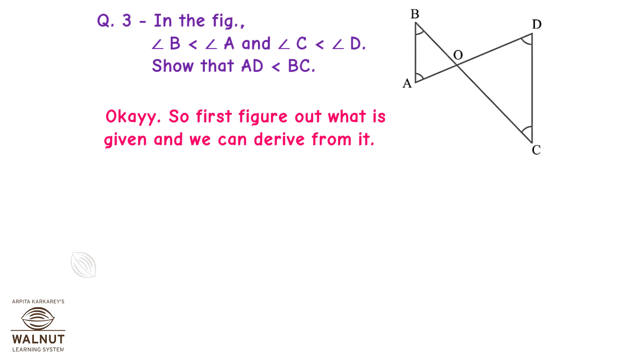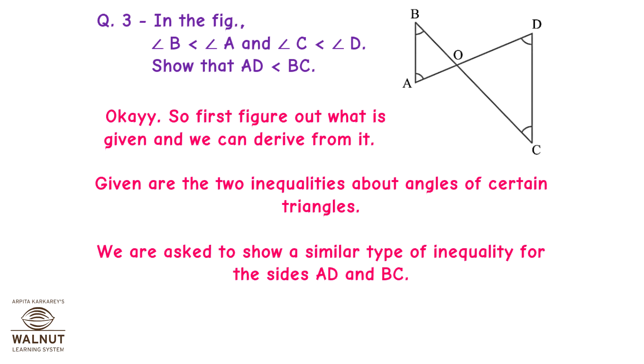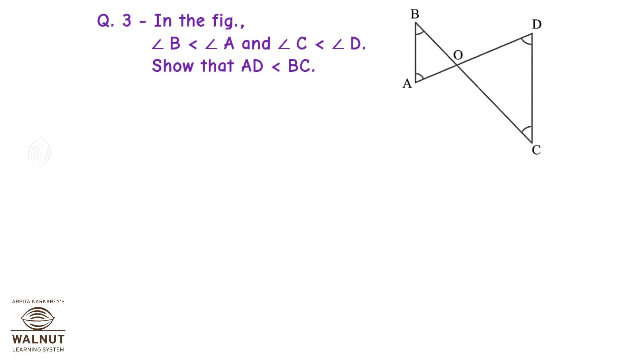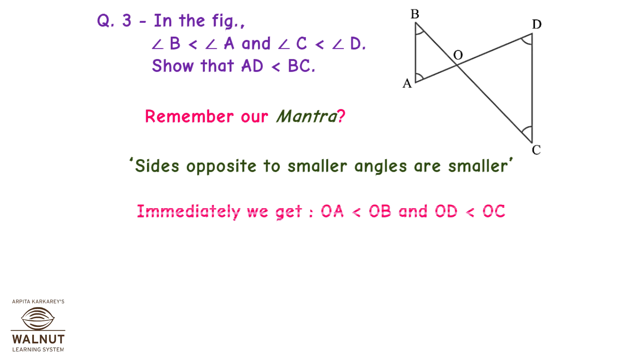So, first figure out what is given and we can derive from it. We are given two inequalities about angles of certain triangles. We are asked to show a similar type of inequality for the sides AD and BC. Well, seems to be an easy job, isn't it? Remember our mantra? Sides opposite to smaller angles are smaller. Immediately we get OA is less than OB and OD is less than OC.